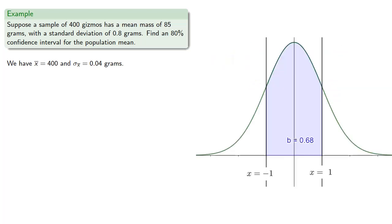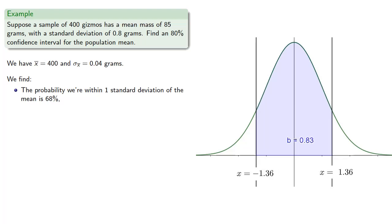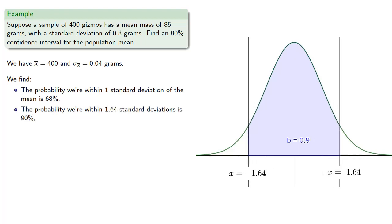So the probability that we're within one standard deviation of the mean is 68%, which is not 80%. So let's expand our interval. If we go up to 1.64 standard deviations of the mean, the probability we're within 1.64 standard deviations is 90%, which is a little too much.